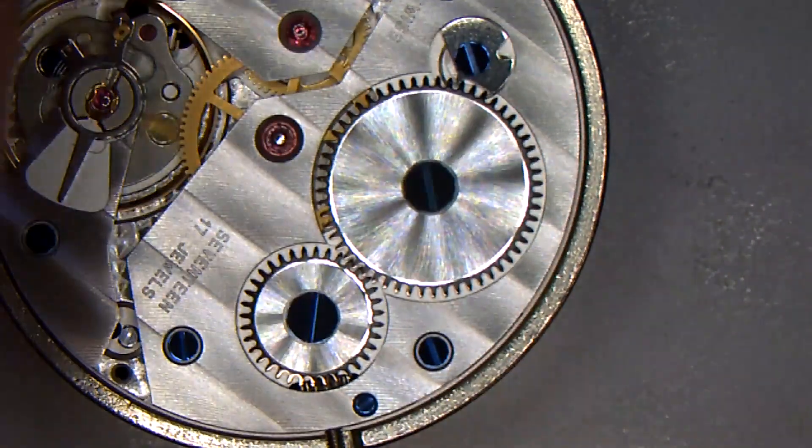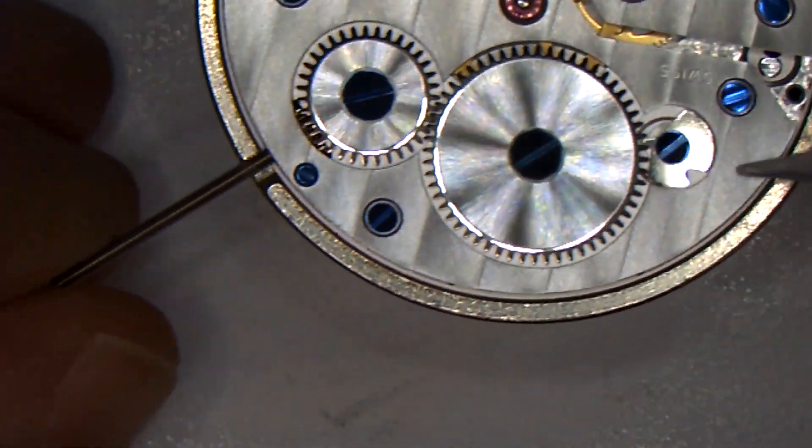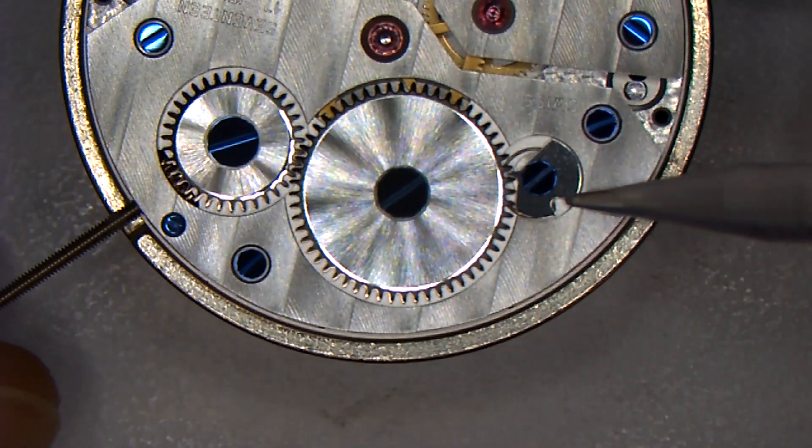To accomplish that, I'm actually going to spin the movement around. I like to do this with my dominant hand, so I'm going to have the crown in my left hand and my pick here in my right hand.